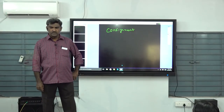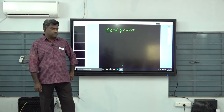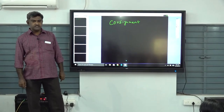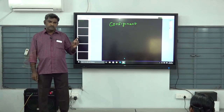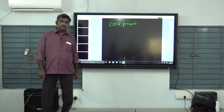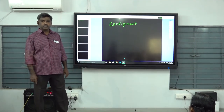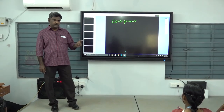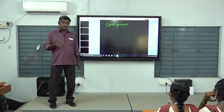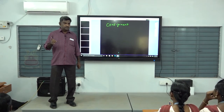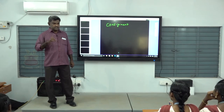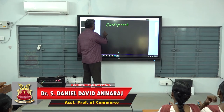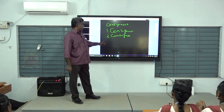Good morning. Now we discuss the theory part of consignment. Consignment is a shipment of goods from a manufacturer or a wholesaler to an agent to be sold on commission basis. The two parties involved in consignment are the consignor and the consignee.